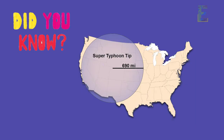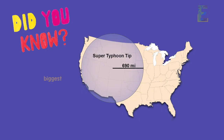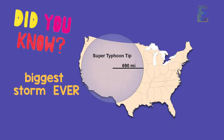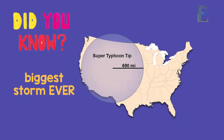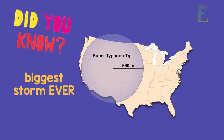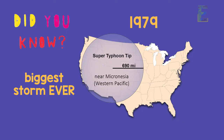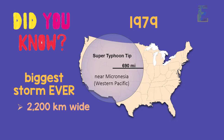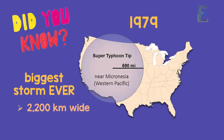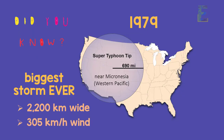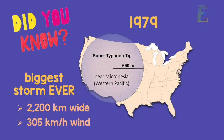Now for a fun fact, did you know that the biggest ever storm on record was Typhoon Tip in 1979 near Micronesia in the western Pacific? It was 2,200 kilometers wide with 305 kilometer per hour winds.